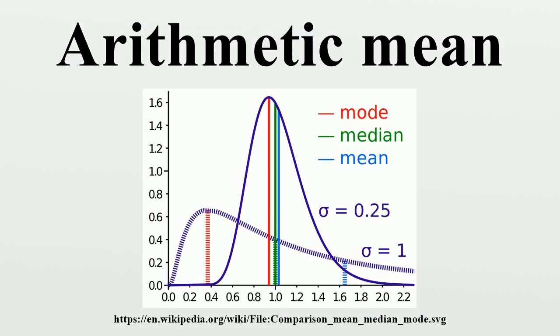In mathematics and statistics, the arithmetic mean, or simply the mean or average when the context is clear, is the sum of a collection of numbers divided by the number of numbers in the collection.